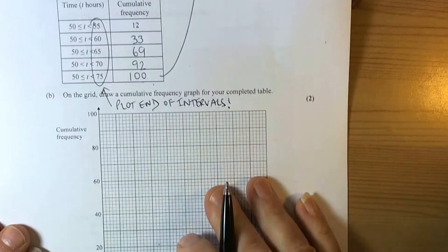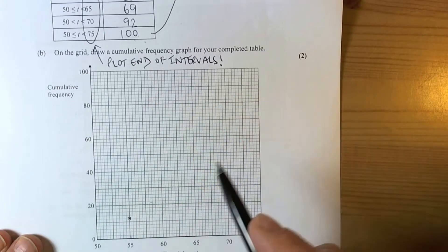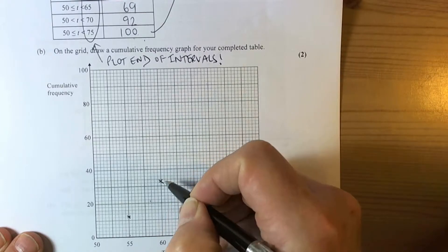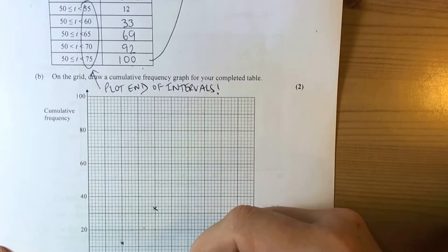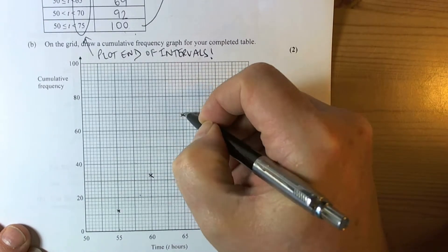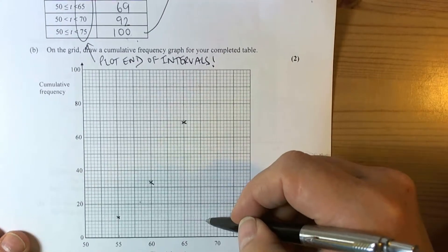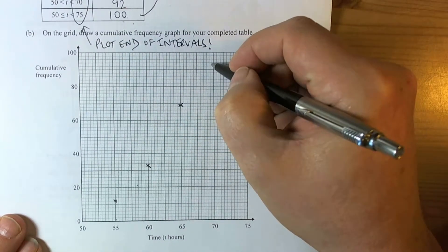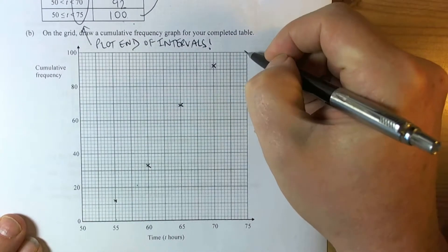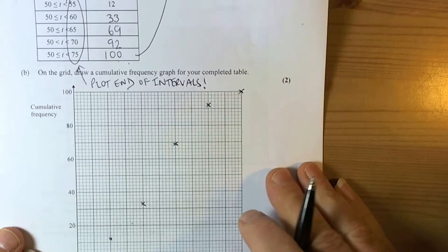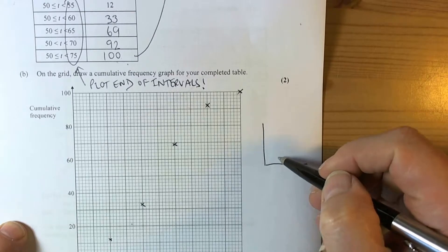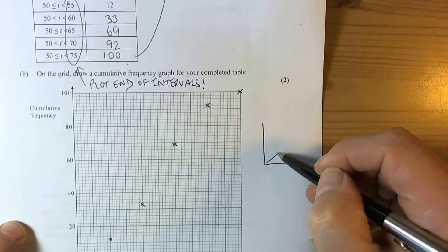Our next point is 60 and 33, so we go up to 33. Then it was 65 against 69, so 65 up to 69. Then 70 to 92, and 75 to 100. One thing we've got to realise about cumulative frequency graphs is that cumulative means getting bigger and bigger, so the graph should always be increasing.